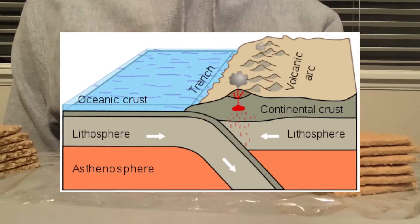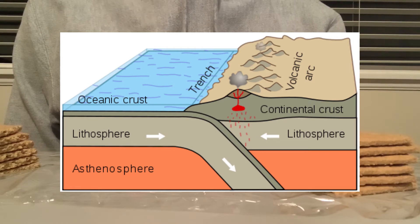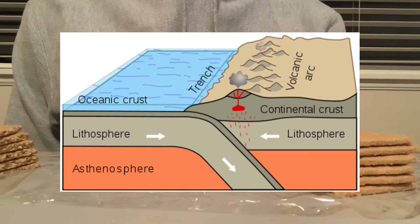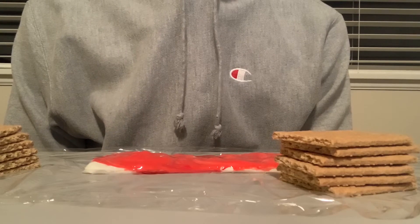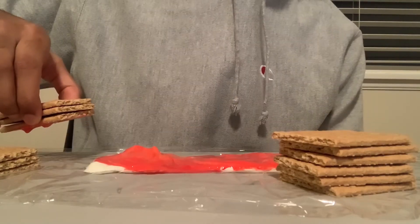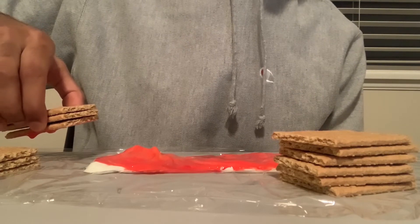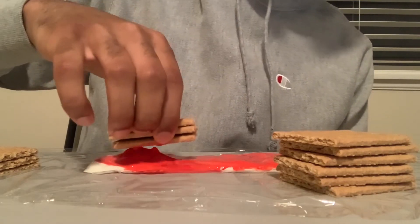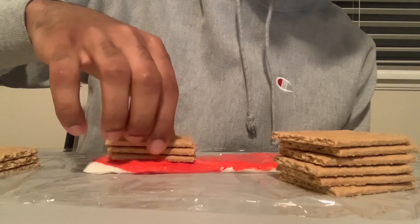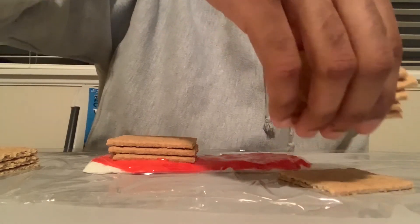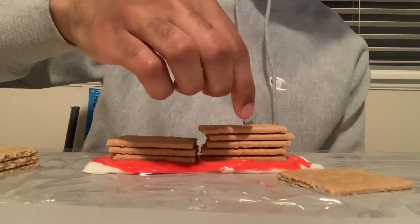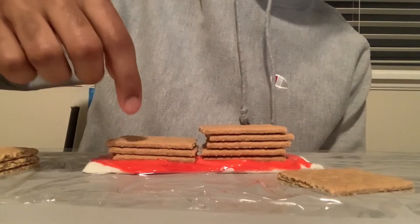There are two main types of crust that lay on top of plates: oceanic and continental. Oceanic plates are under the ocean and continental plates are what make up the continents. Continental plates are thicker and less dense than oceanic plates. To represent the crust I'll add layers of graham crackers — the more graham crackers, the thicker and less dense the crust. So if I had three graham crackers here and five graham crackers here, this crust would be thicker and less dense than this crust.